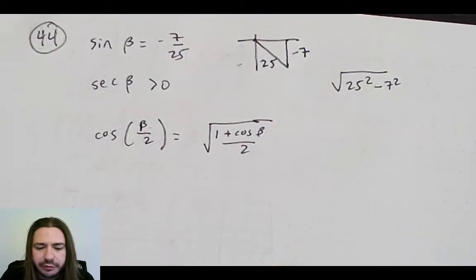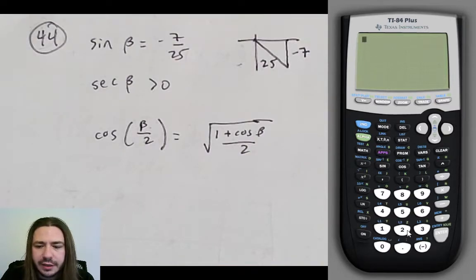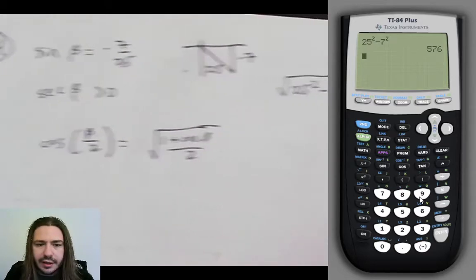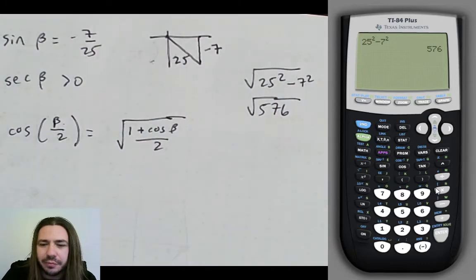So those numbers are getting a little big for me to do mentally. Let's break out the calculator. We've got 25 squared minus 7 squared. Let's see what that's going to be. 576. So square root of 576. Is that a perfect square? It kind of looks like it could be. I think it might be. Let's see if it is. If it's not, no big deal. But,